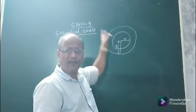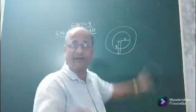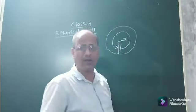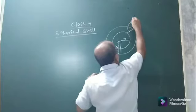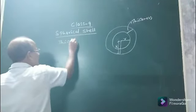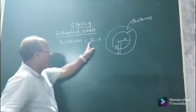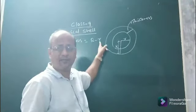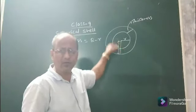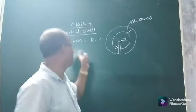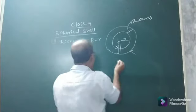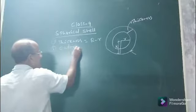A spherical shell is a three-dimensional solid which consists of two concentric solid spheres. This is the outer sphere and this is the inner solid sphere, having two different radii — capital R and small r. This portion is the thickness of the spherical shell. The thickness of a spherical shell is given by capital R minus small r, that is, outer radius minus inner radius.